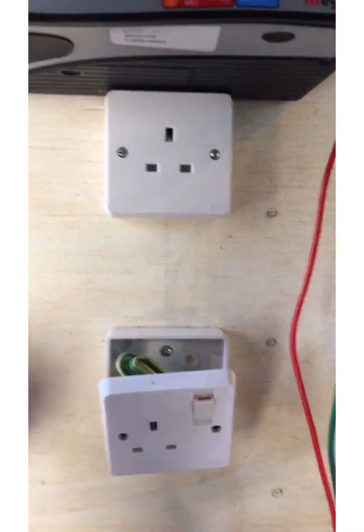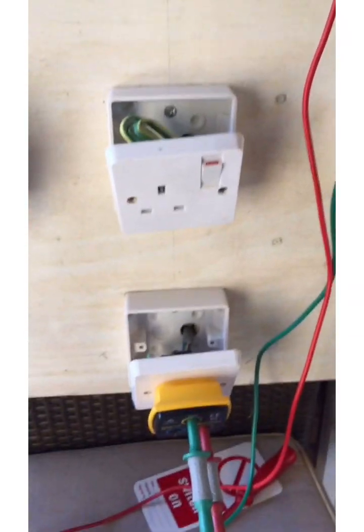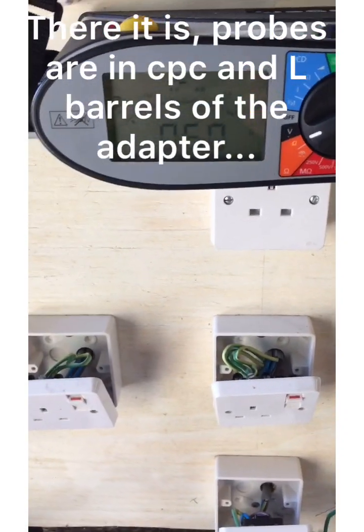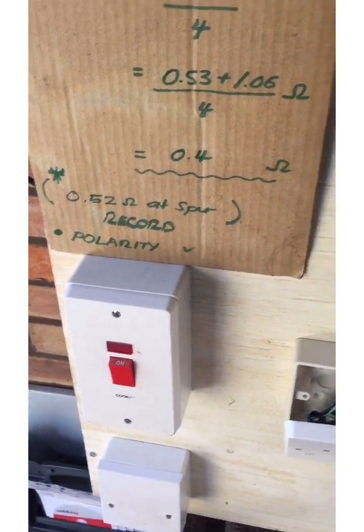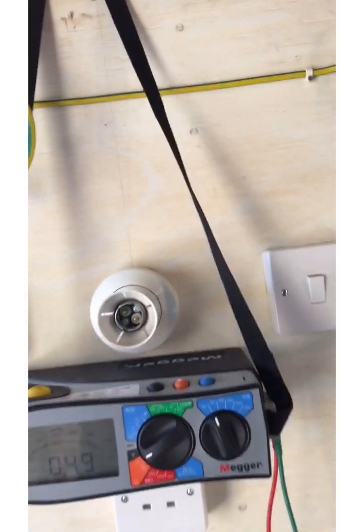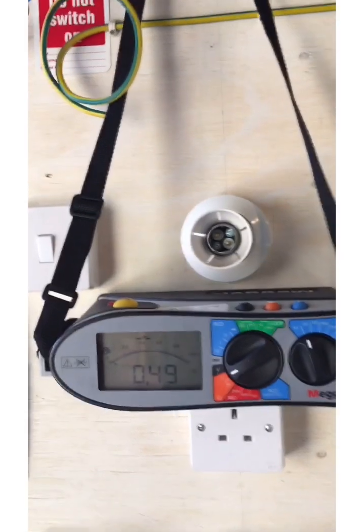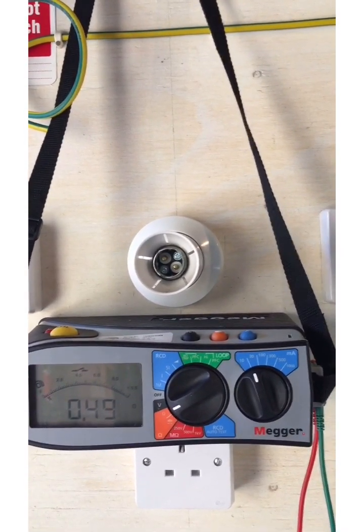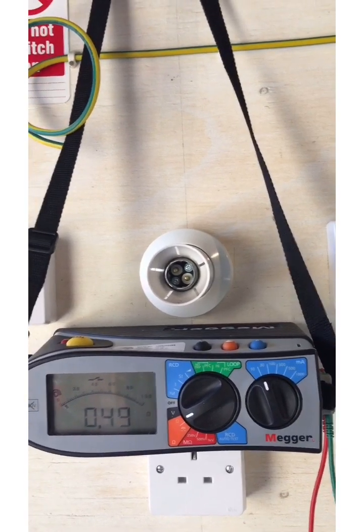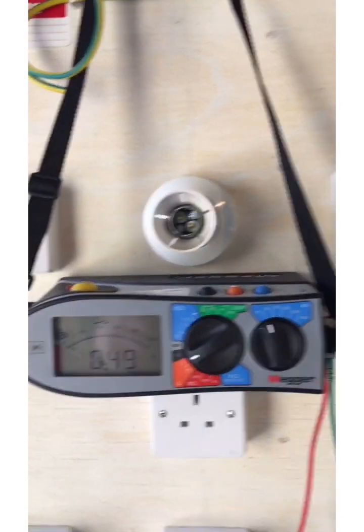0.35 again I'm happy with that and then if we go to the spur and that should give us our highest value and that'll be the one we record and we're getting there 0.5, I got 0.52 before when I did it previously so again I'm happy with that. Now that is our R1 plus R2 value and it also confirms the correct polarity and correct connection of the socket outlets.